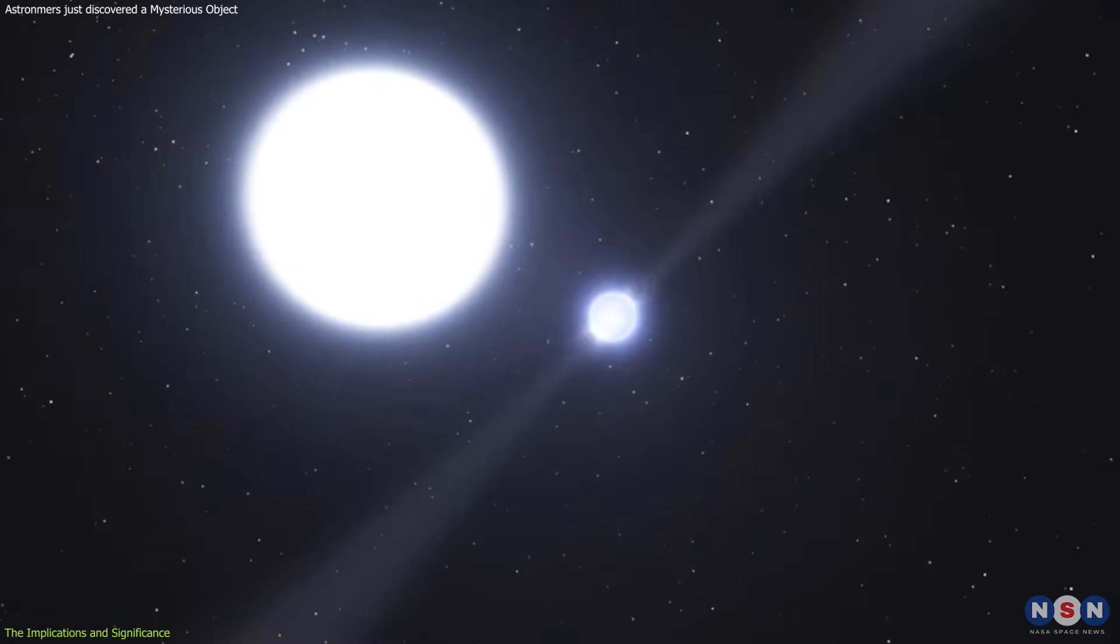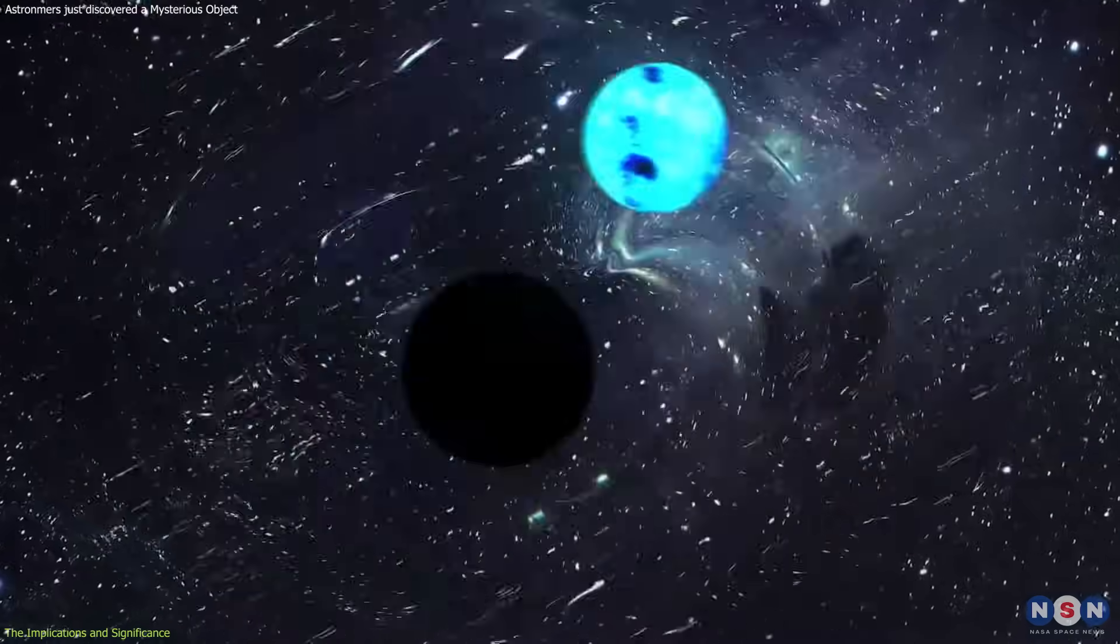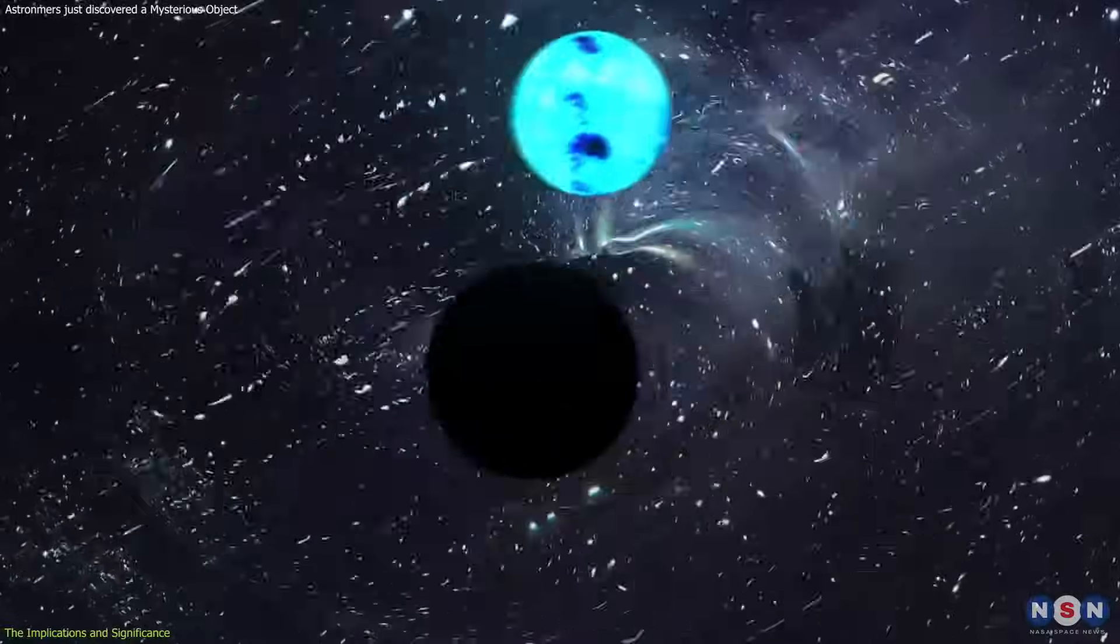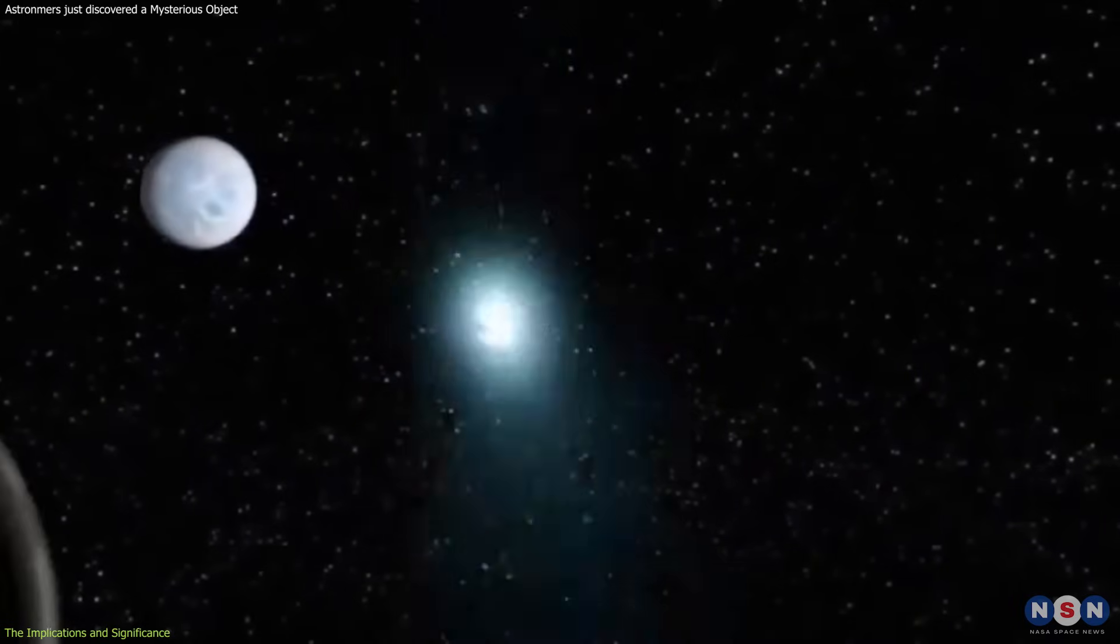This object is also a rare and unique system, as it is one of the few cases where a neutron star, or a black hole, is orbiting another neutron star.